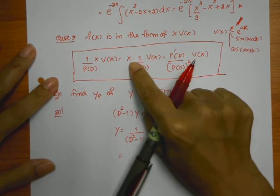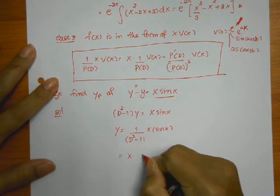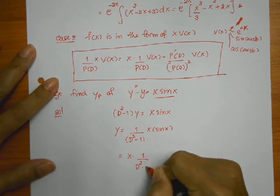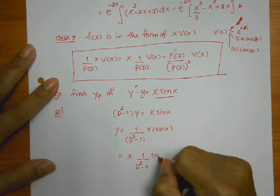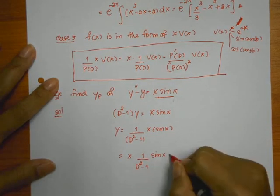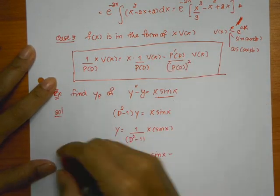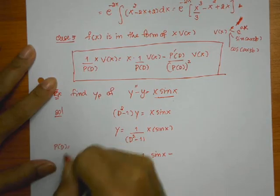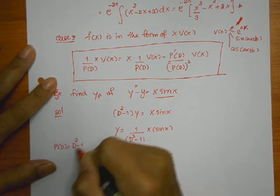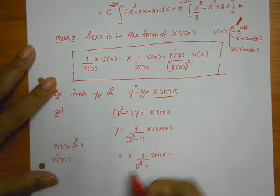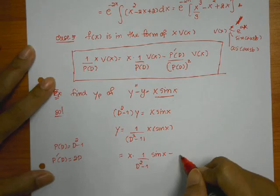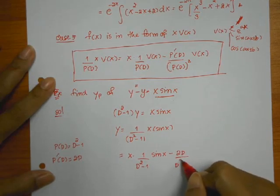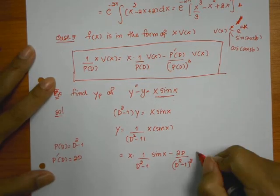So we've got the first term x times 1 over p(dx), which is d squared minus 1, times v(x), which is sine x. Minus the first derivative of p(dx). Our p(dx) is d squared minus 1. So the first derivative of our p(dx) is equal to 2d. So up here, it's got to be 2d divided by (d squared minus 1) to the power 2, and times sine x.